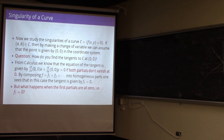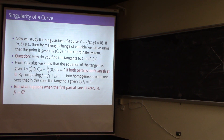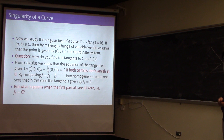So now we know what a curve is. We want to ask: what do we mean when we say the curve is singular at some point? Let's assume the curve is defined by f(x,y) = 0. If we have any point on the curve, we can make a linear change of coordinate to assume that the point is the origin. So how do you find the tangents to the curve at (0,0)?